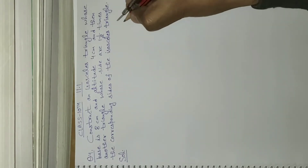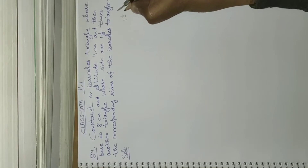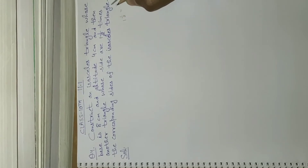First of all, we shall change this mixed fraction 1½ into a simple fraction or p upon q form. So 2 ones are 2, and 2 plus 1 is 3. So we will get 3 upon 2.